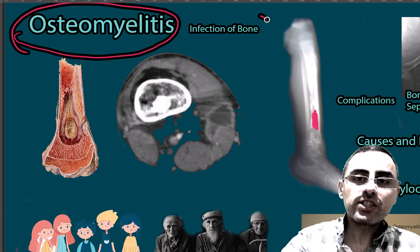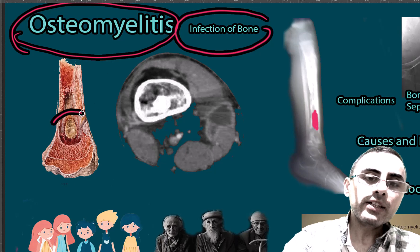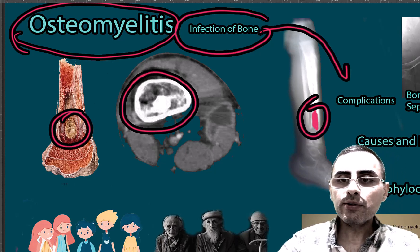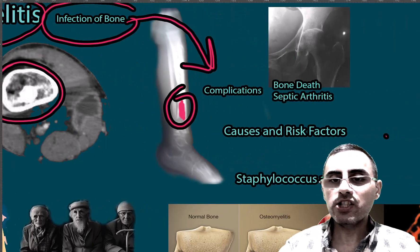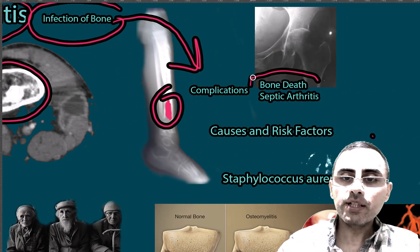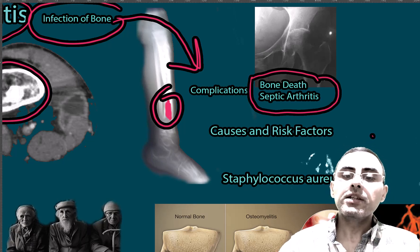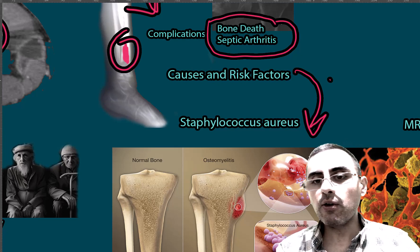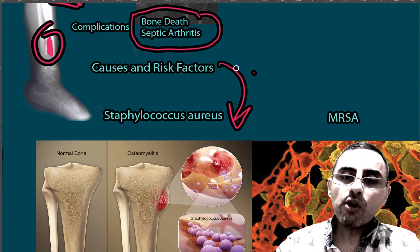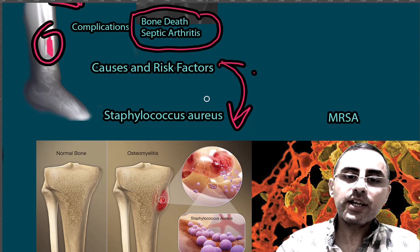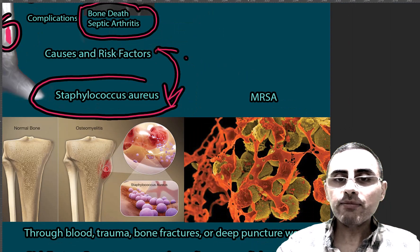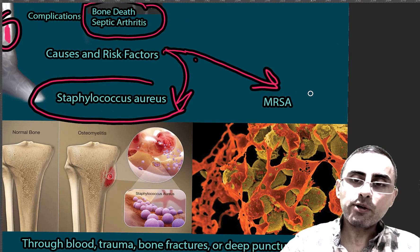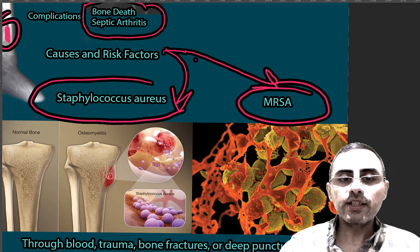Osteomyelitis is infection of bone. It's not a common disease — it's rare — but it has serious and severe complications like bone death and septic arthritis. It is usually caused by bacteria, most commonly Staphylococcus aureus, and sometimes by methicillin-resistant Staphylococcus aureus (MRSA).